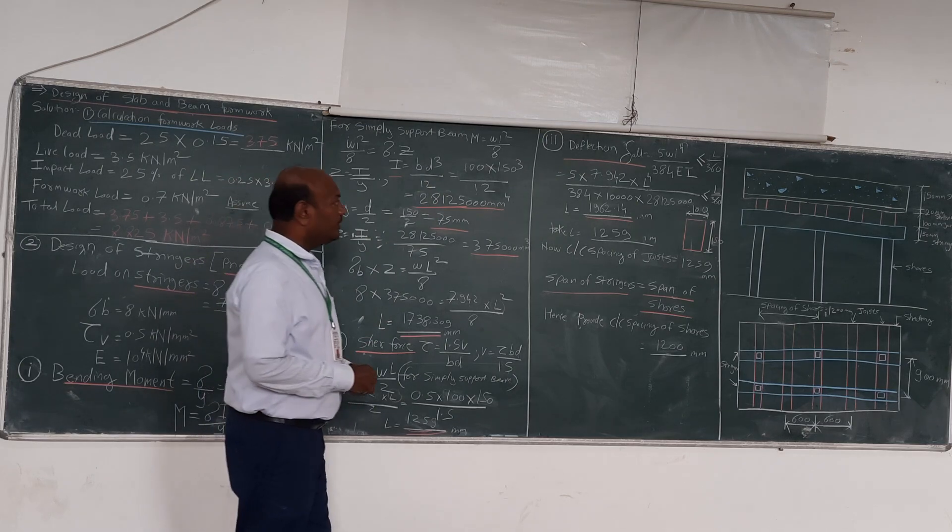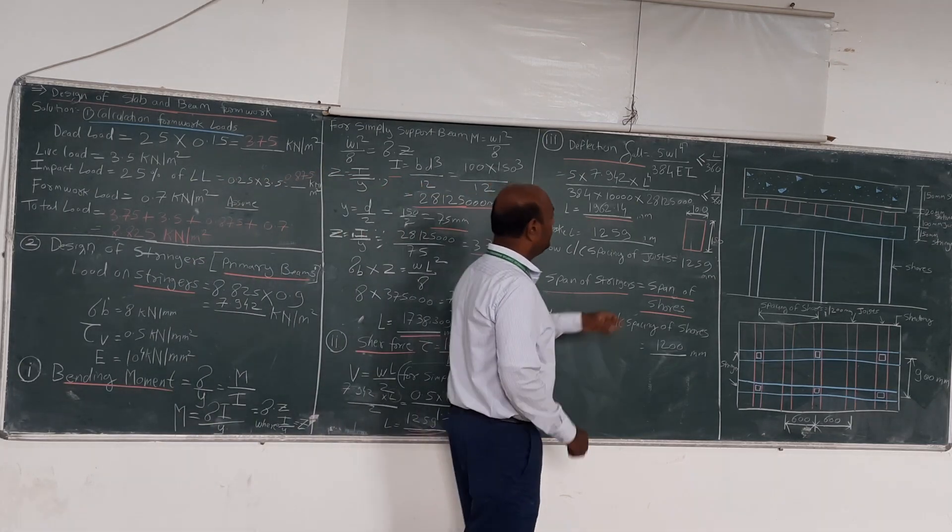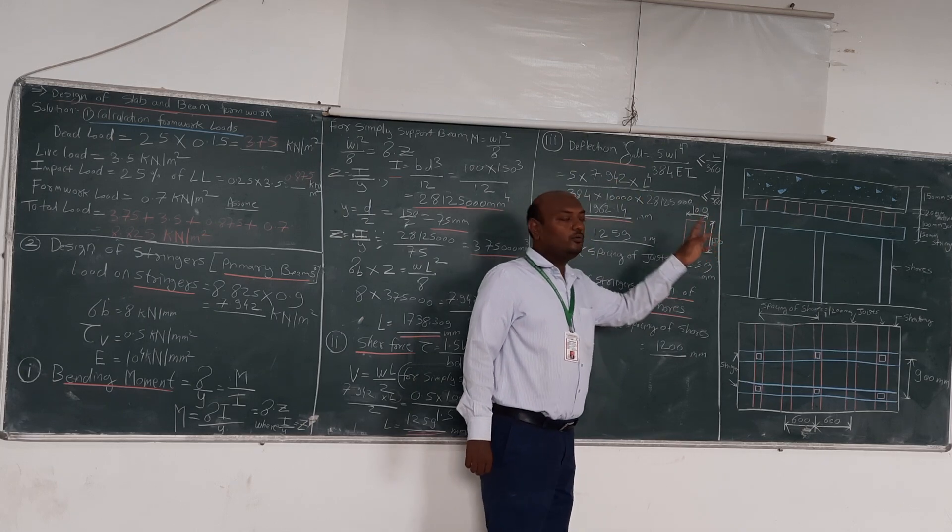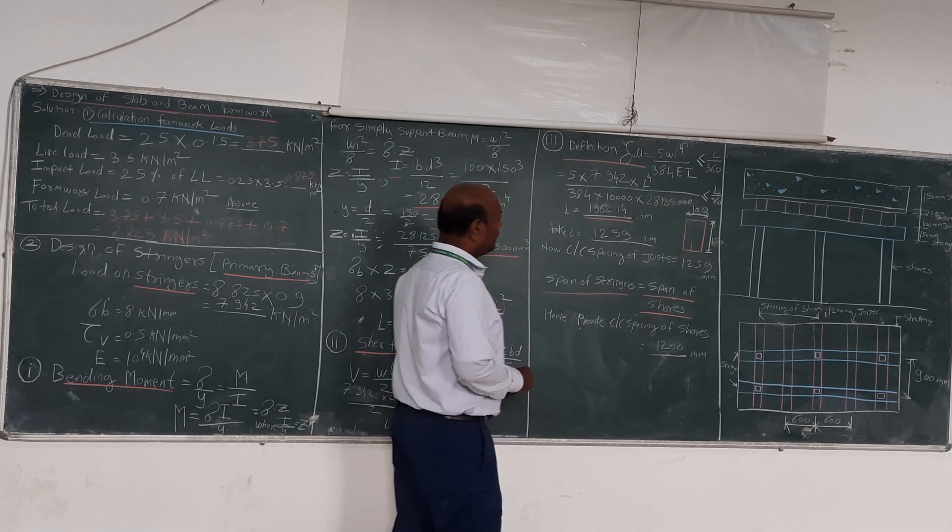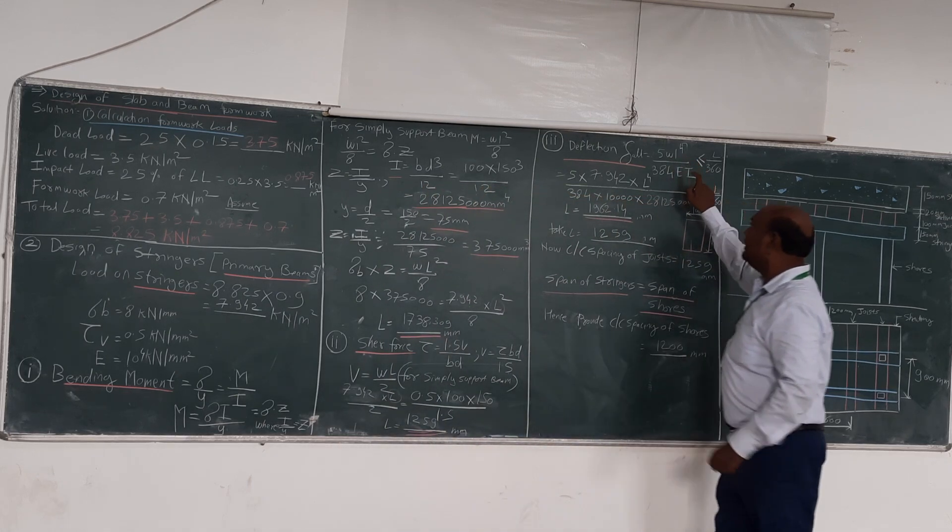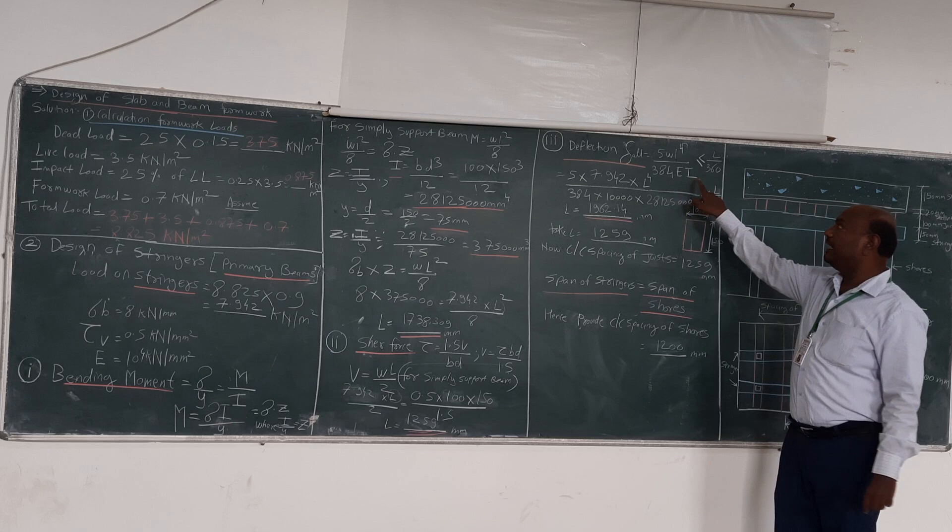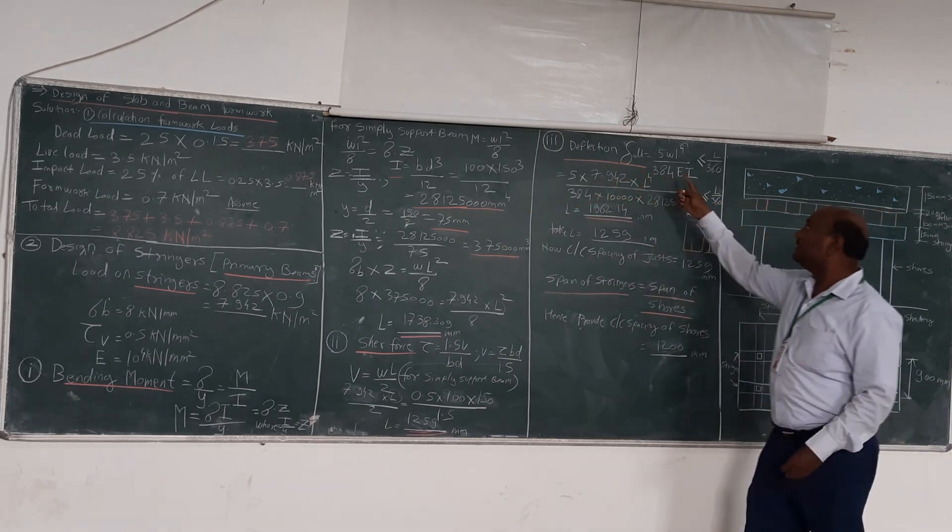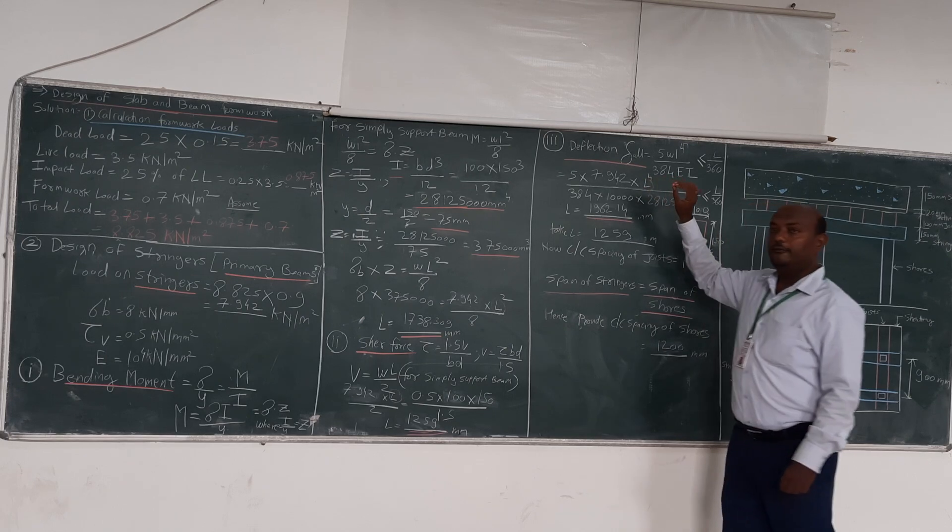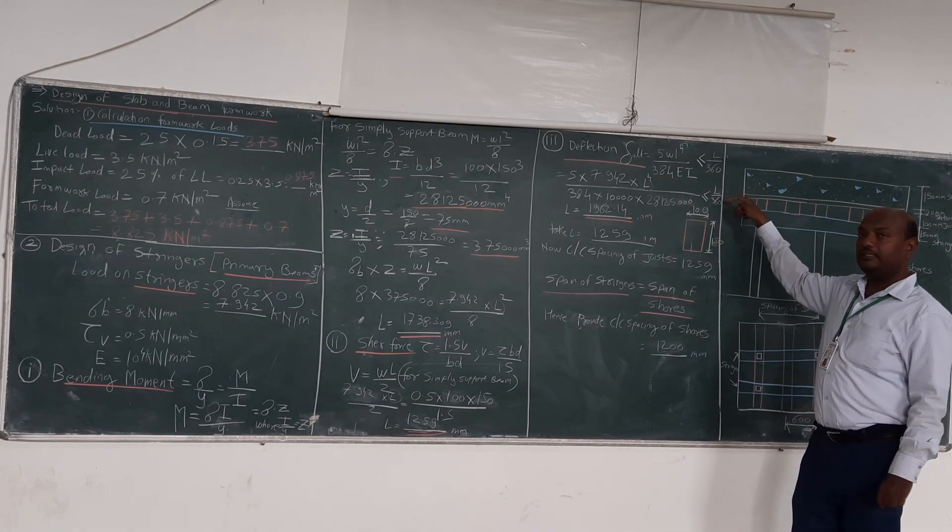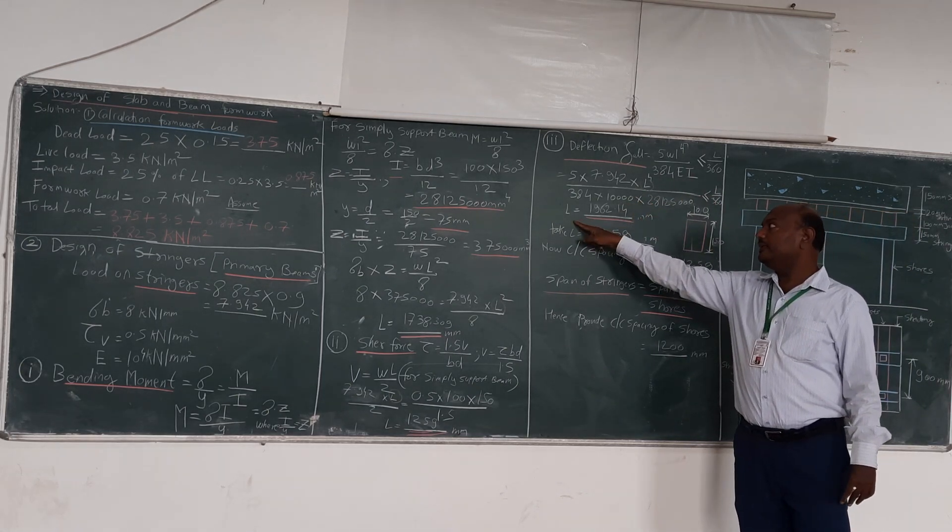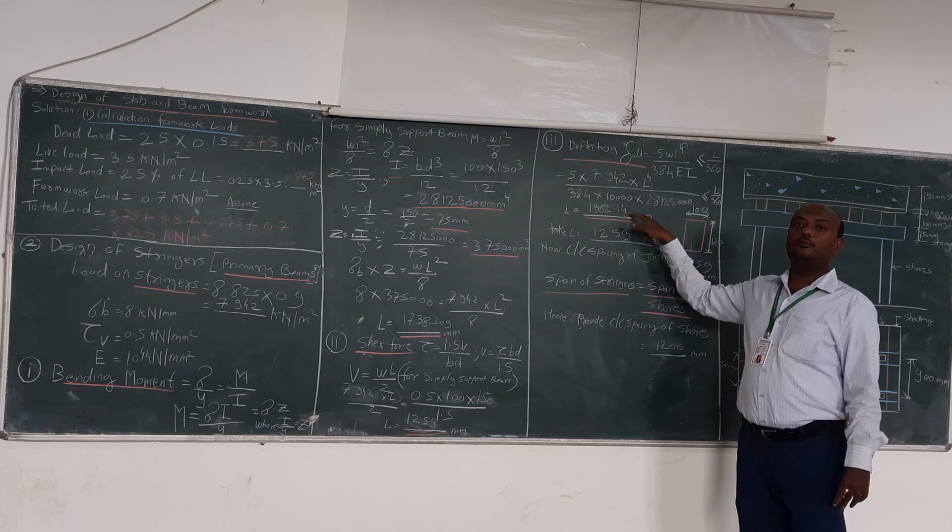Now we will use the deflection formula, 5wL to the 4 divided by 384EI, which should be less than or equal to L by 360. In this formula, all values are known—w and I are calculated, E is given in the question. Only the unknown is L. By solving this equation, we will get the value of L, that is 2962.14 mm.